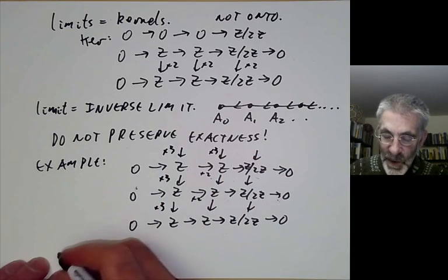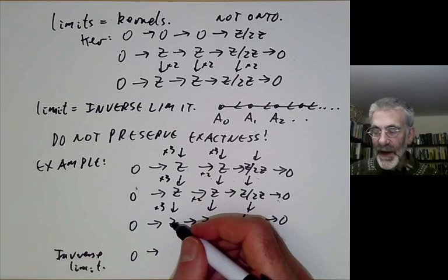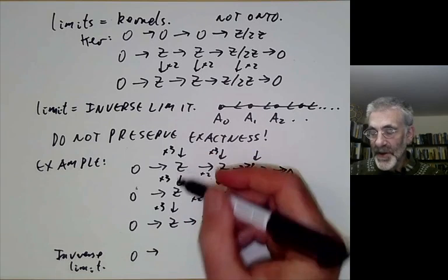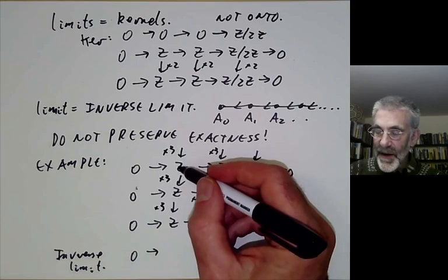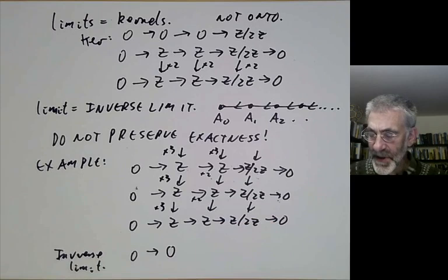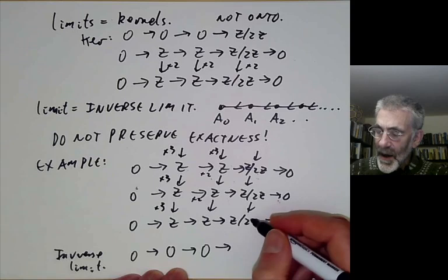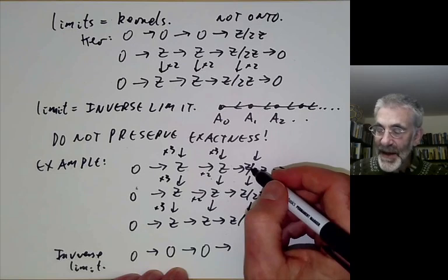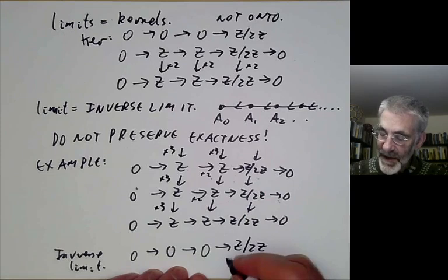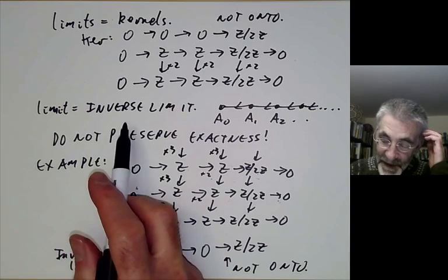Computing the inverse limits of the columns: the first column gives 0. The second column — picking elements in each copy of ℤ where each must be 3 times the previous — forces the element to be a multiple of every power of 3, which is impossible unless it's 0. So we get 0 there too. But for the last column (ℤ/2ℤ), we can pick the non-zero element at each stage, since 3 times the non-zero element in ℤ/2ℤ is still the non-zero element. So the inverse limit is ℤ/2ℤ, and the map is not onto. Hence inverse limits don't preserve exactness even though direct limits do.